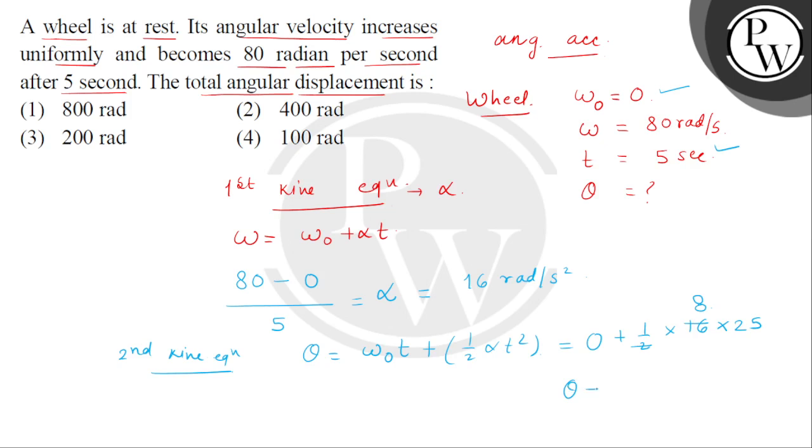We get theta answer as 200, and the SI unit of theta is radian. So the total angular displacement is option 3, 200 radian. Thank you.